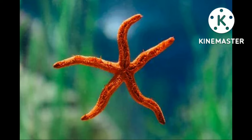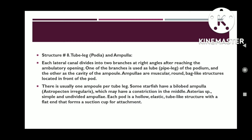Structure eight: ampullae. Ampullae are muscular, round, bag-like structures located in front of the podium. There is usually one ampulla per tube foot. Some starfish have bi-lobed ampullae which may have a constriction in the middle. In Asterias sp., ampullae are simple and undivided. Each podium is a hollow elastic tube-like structure with a flat end that forms a sucker cup for attachment.